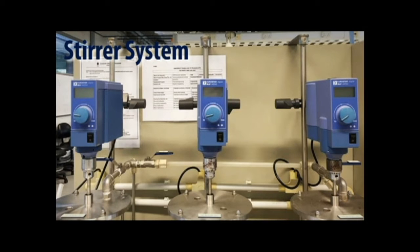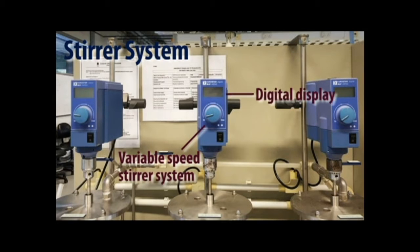For the stirrer system, it consists of a variable speed stirrer system with digital display consisting of a motor and a shaft with impellers made of stainless steel.